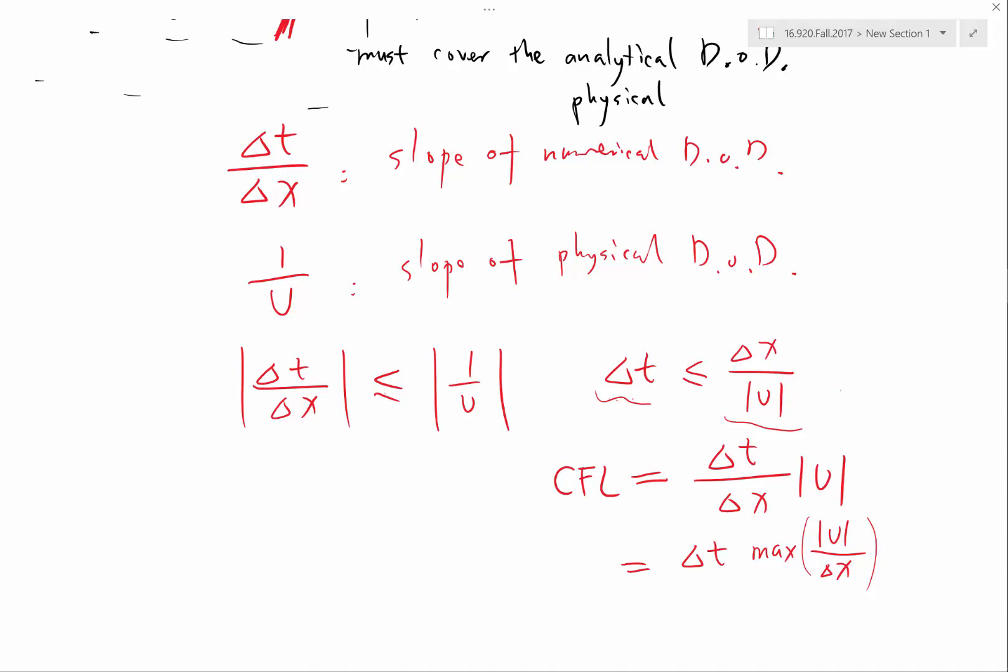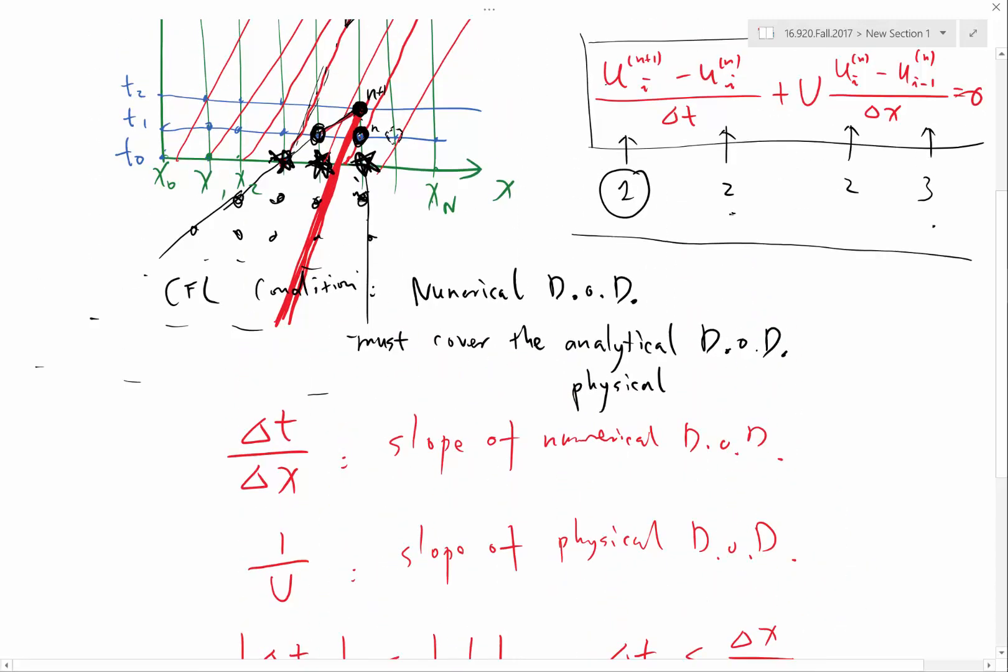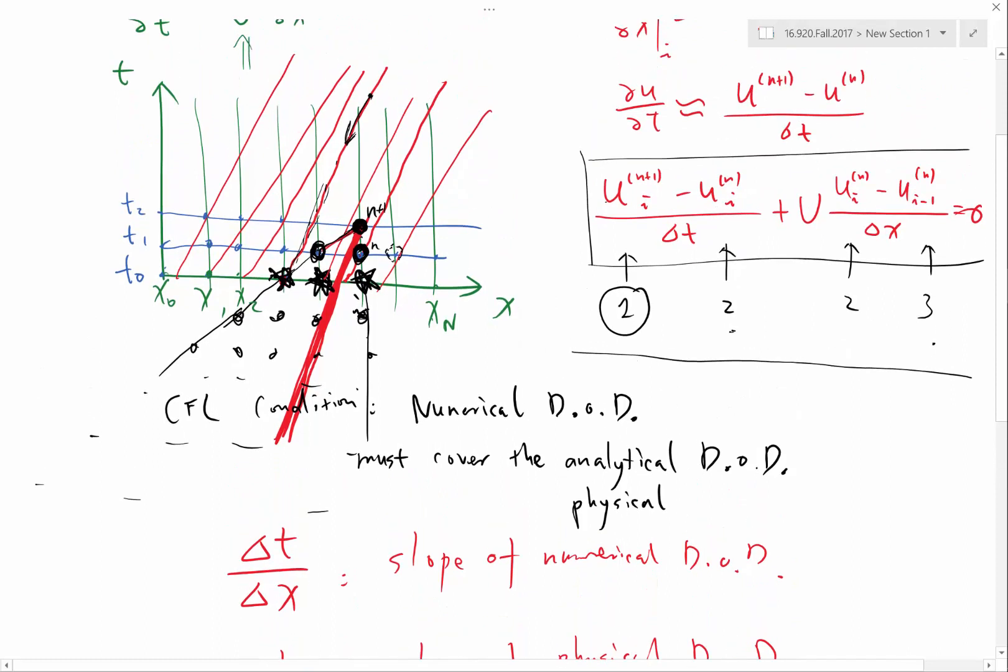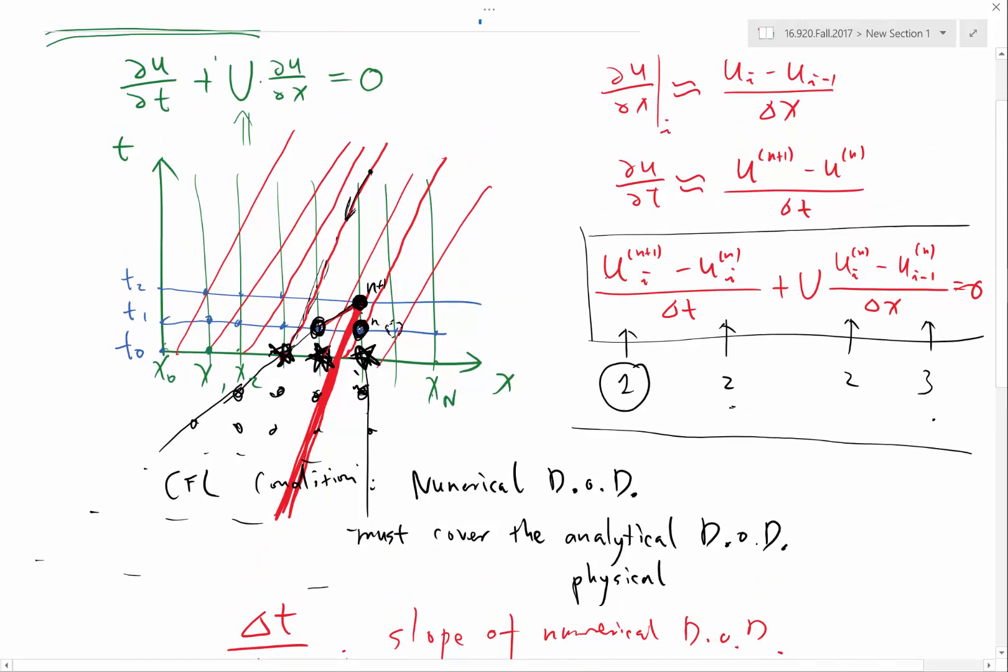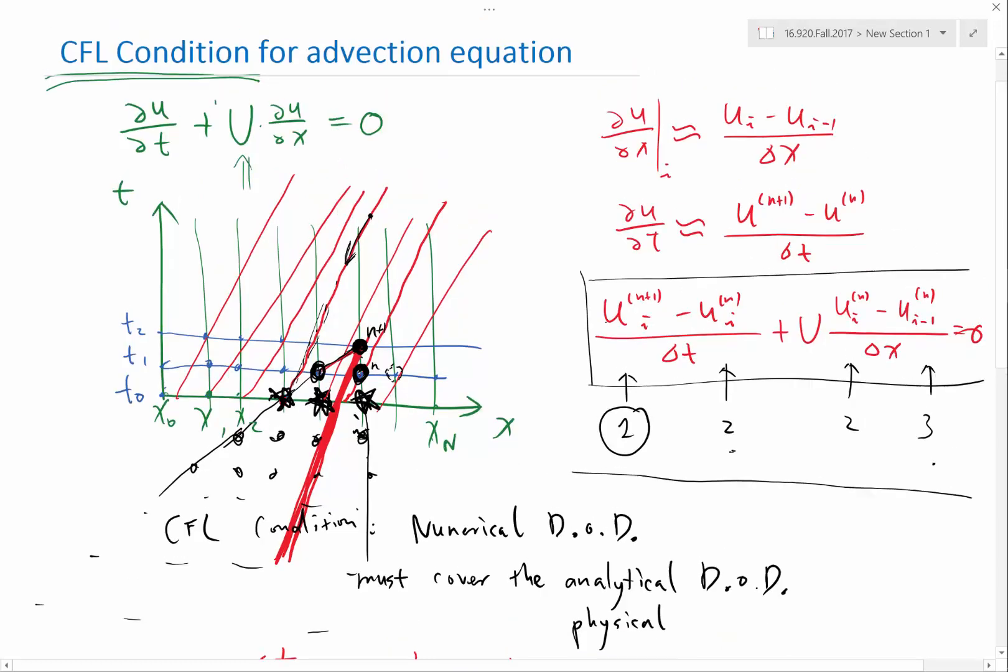Okay, there are cases where your CFL can be greater than 1. For example, if you use something more complicated than forward Euler, Runge-Kutta schemes, you can use a CFL number greater than 1, 2 or something, it's going to be fine. If you use a spatial discretization that depends on more than the neighboring grid point, for example, if you use your spatial discretization that is related to also U of i-2, then your numerical domain of dependence is going to have a shallower slope, right, that also enables you potentially of using a CFL number greater than 1.